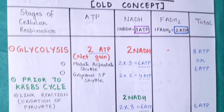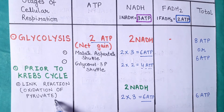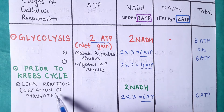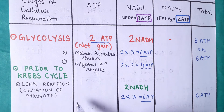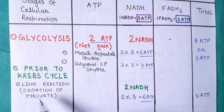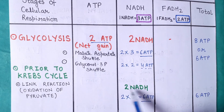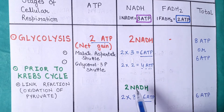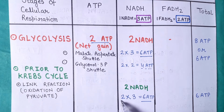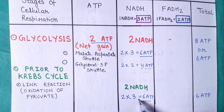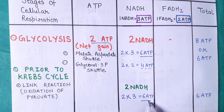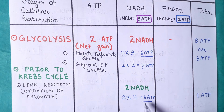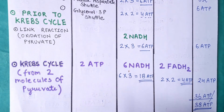Next, we come to the oxidation of pyruvate, also called the link reaction, in which pyruvate gets converted into acetyl-CoA. In the oxidation of pyruvate, there is a gain of two molecules of NADH. One molecule of NADH gives 3 ATP, so two molecules of NADH multiplied by 3 ATP gives a net gain of 6 ATP from pyruvate oxidation.